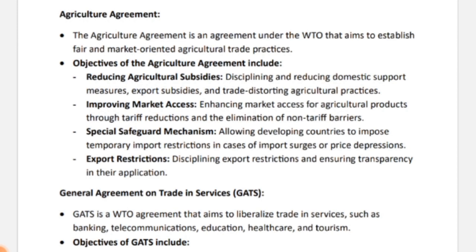In short, the first objective was: reduce the domestic support you are giving to the agriculture sector so it becomes competitive and improves its own market access. The second main objective was improving market access for agriculture products — through tariff reductions and elimination of non-tariff barriers. When you reduce tariffs or eliminate non-tariff barriers, market access for agriculture products increases.